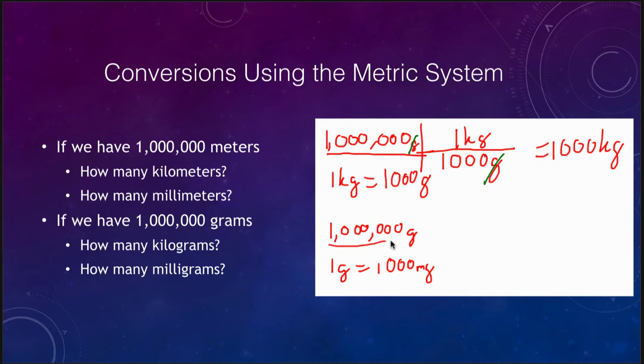So we set this up to do our conversion. Again, we make sure that our units are going to cancel, so we put one gram down here, 1000 milligrams up here. And if we multiply 1 million times 1000, we get 1 billion milligrams.